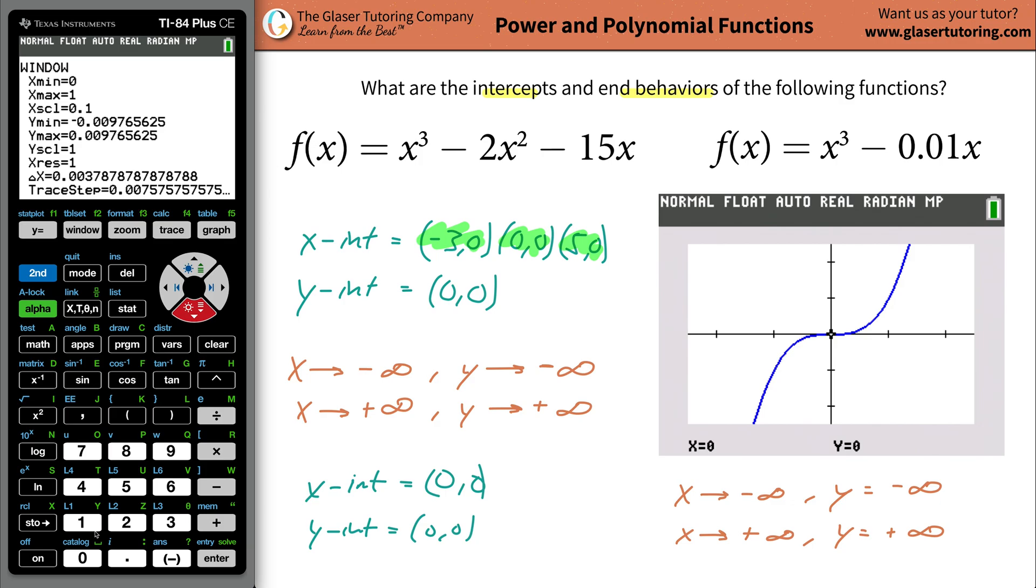Then your y minimum value, let's go to a y minimum of negative point zero zero zero zero one. Let's go to a y max of point zero zero zero zero one. And leave it as that scale. Now let's hit graph. So we actually now can see something's going on here. Something's definitely going on here.